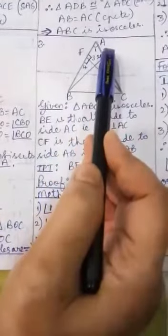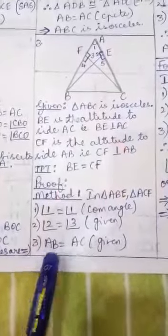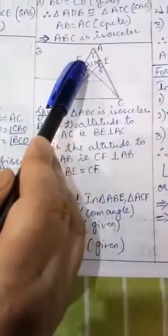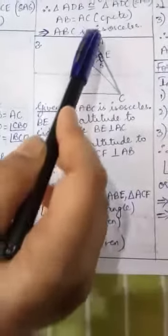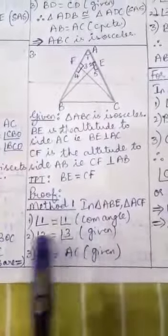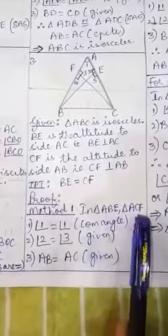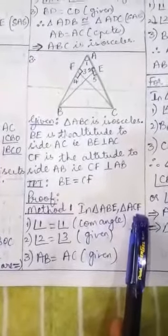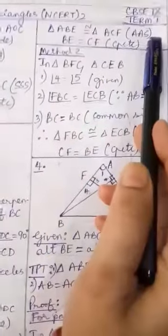Angle A and angle 2 contain the side AE, so clearly AB is not the included side. Angle A and angle 3 contain the side AF, so clearly AC is not the included side either. Therefore, by the AAS congruence criterion, the two triangles are congruent to each other. Triangle ABE is congruent to triangle ACF by the AAS congruence criterion.